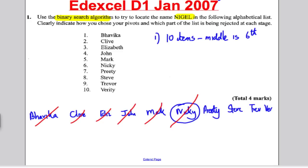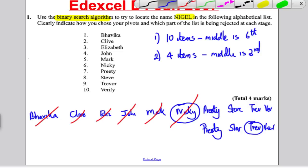Now at this stage I'm looking for Nigel. Nigel would be after in alphabetical order, so I cross off Nicky and all the ones before. I'm left with my second stage where I have Pretty, Steve, Trevor, and Verity. Step two, I've got four items, so the middle is the third, which is Trevor.